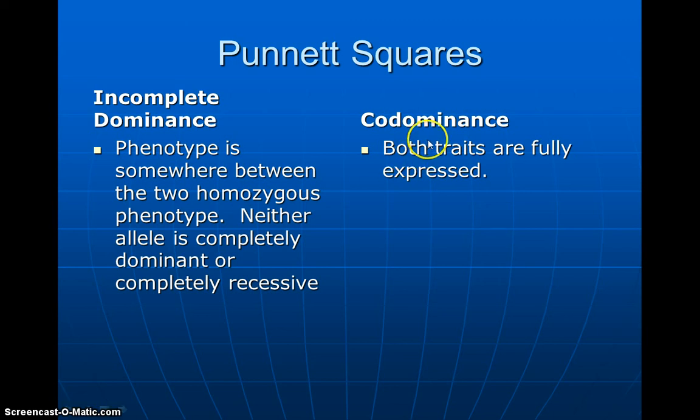Then we have codominance. That's when both traits are going to be expressed. An example here is if we have a black bunny and a white bunny and they produce spotted bunnies, you can see both the traits.